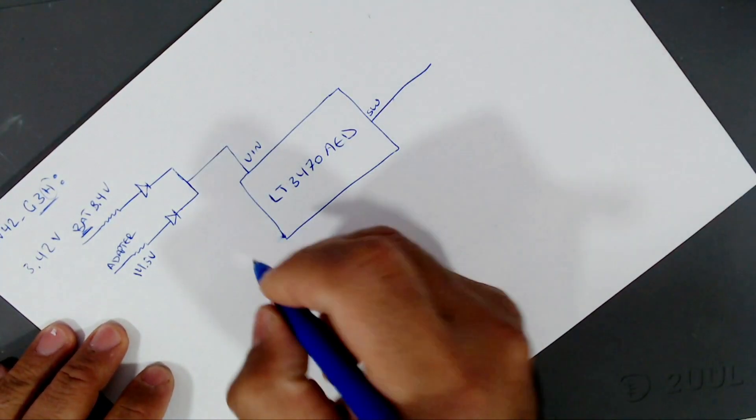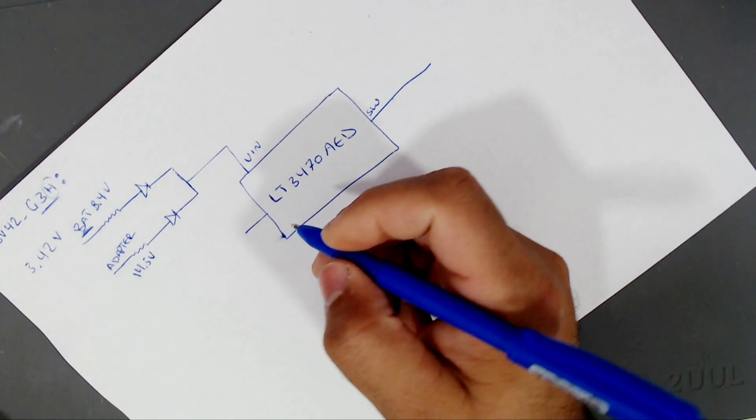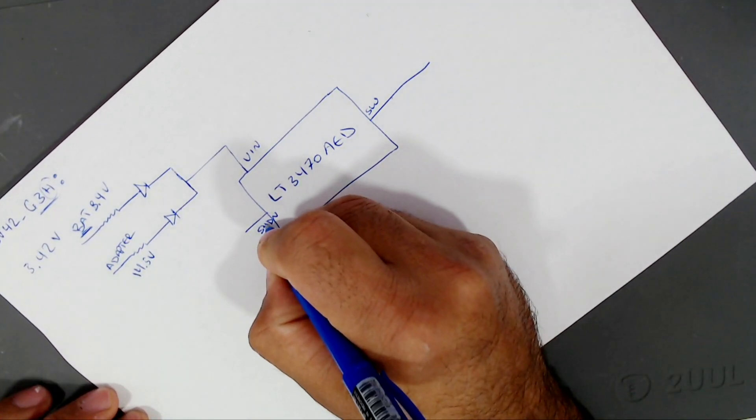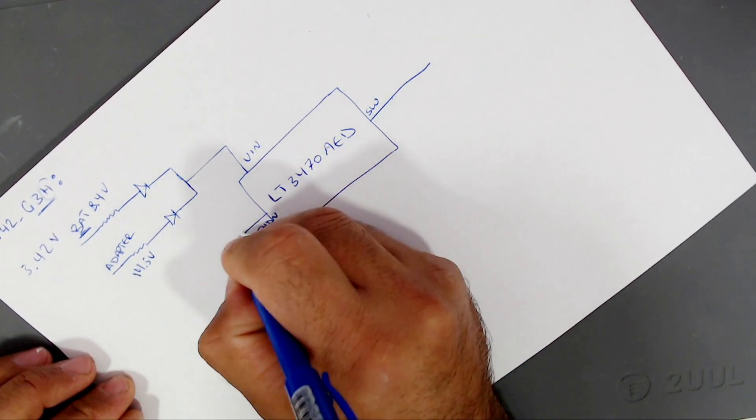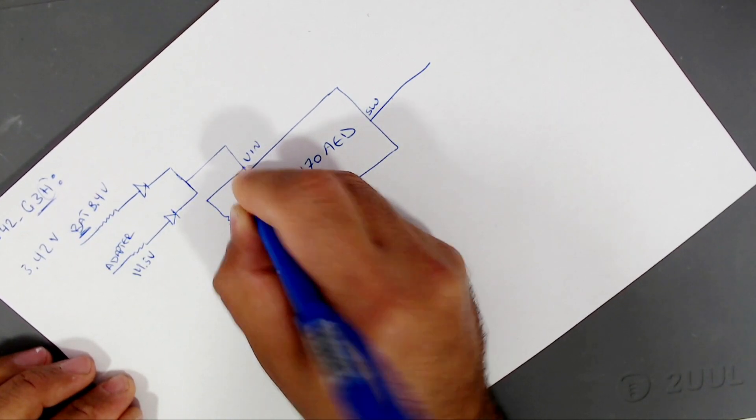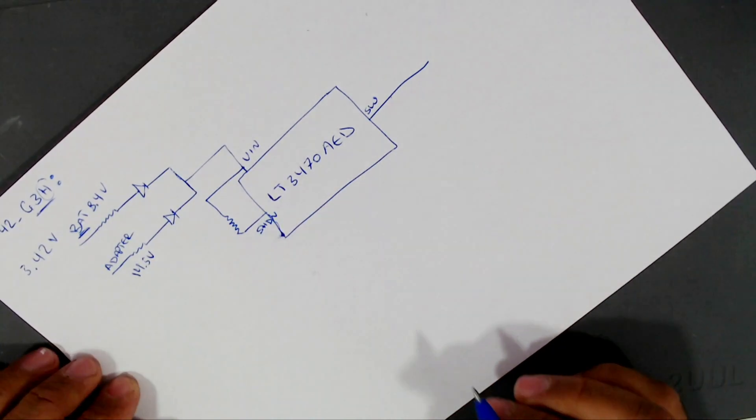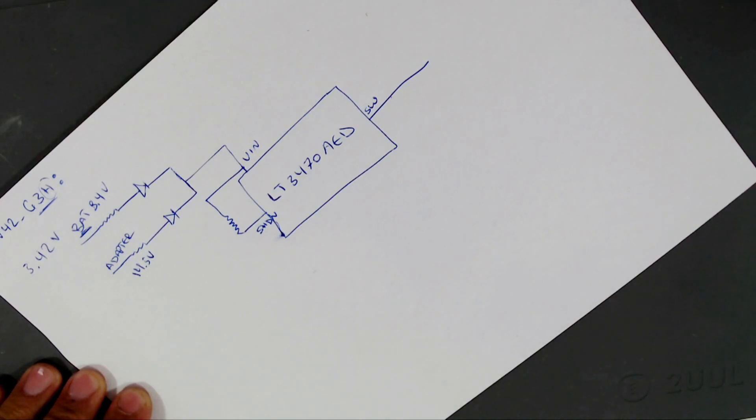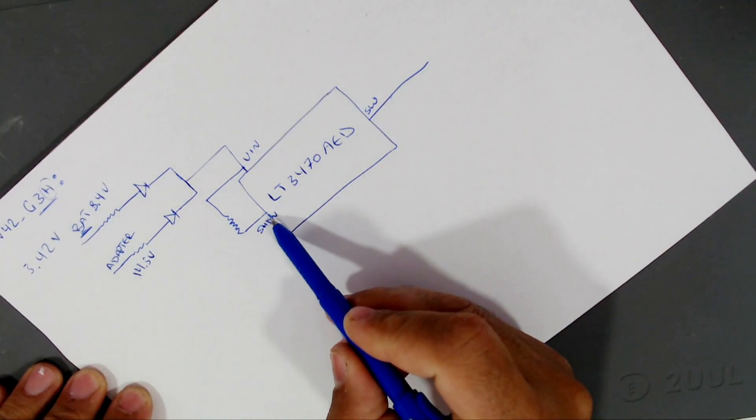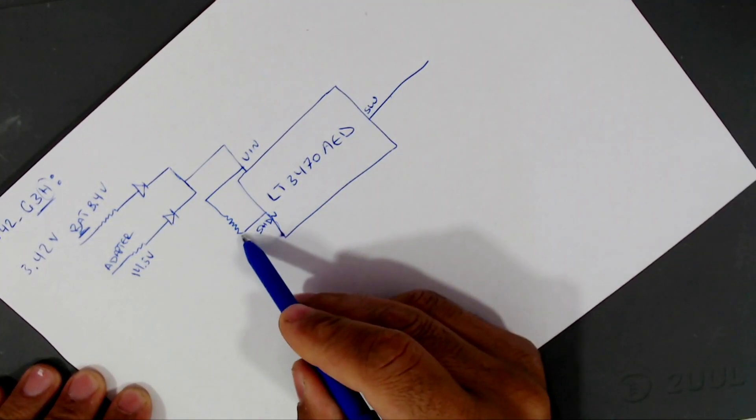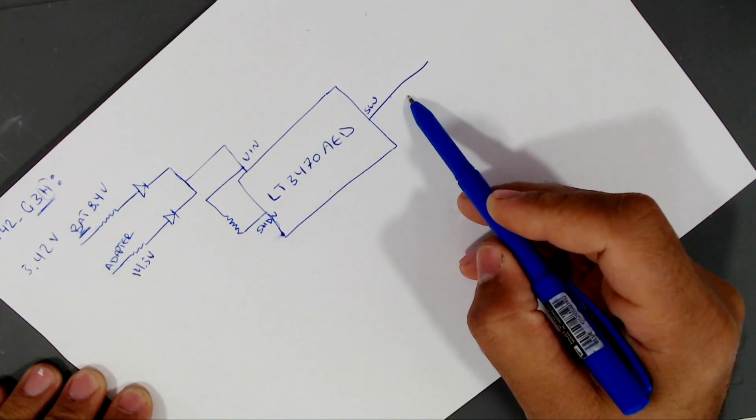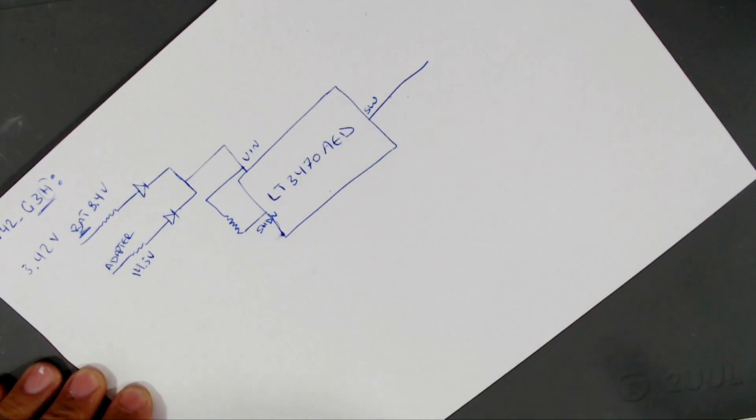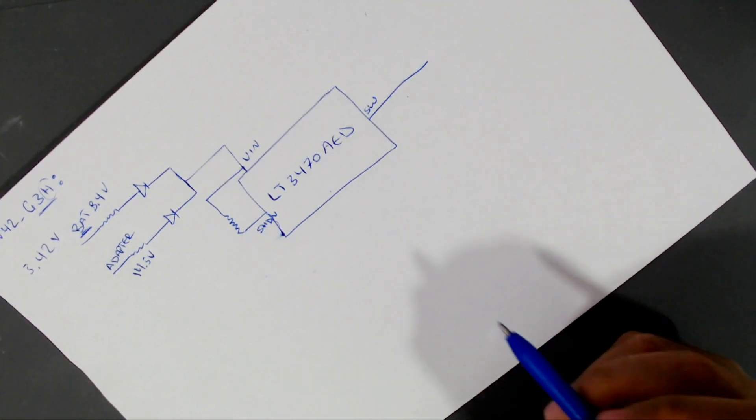So there is a pin also called shutdown, SHDN. This pin normally is tied through a resistor to the VIN. If you want to use this chip in another device, not in a laptop, and you want to control that device, powering it on and off, you can use this shutdown pin. If you pull it to ground, then this chip will not output any voltage. And if you pull it to VIN voltage, then this chip will work or will output a voltage.